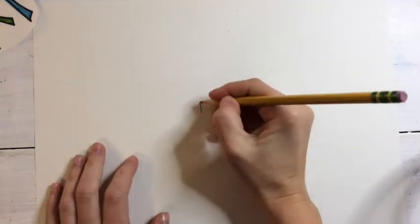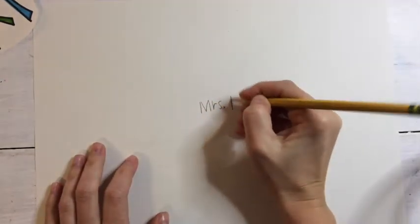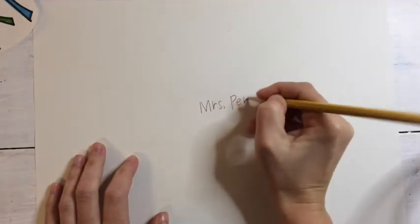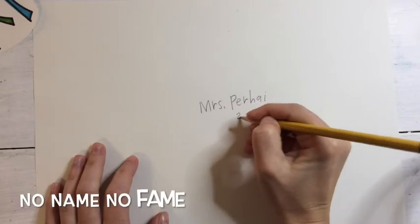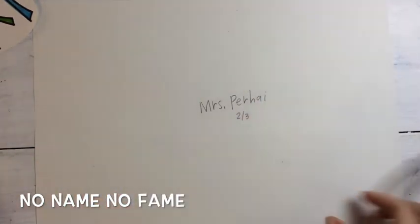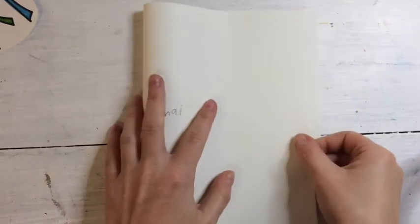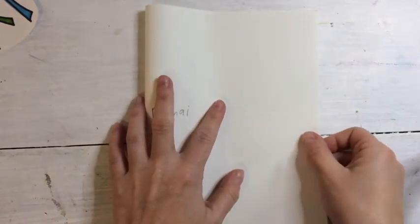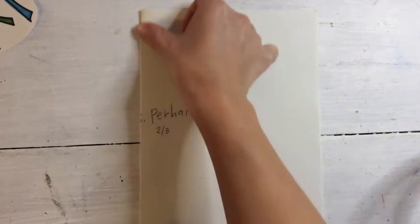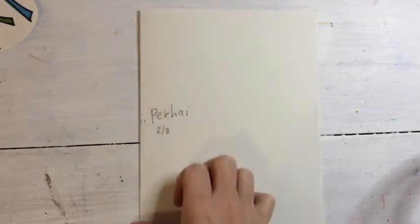The first direction is always the same: pick up your pencil and write your name, because no name, no fame. You'll also want to put your art code on the back. Then flip your paper like a pancake and fold it in half, lining up the corners and the edges — hold it and fold it. Your name should be on the outside.